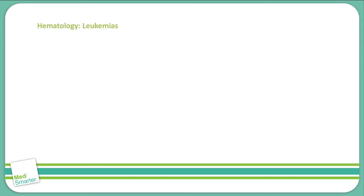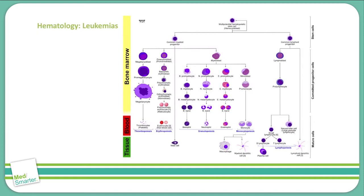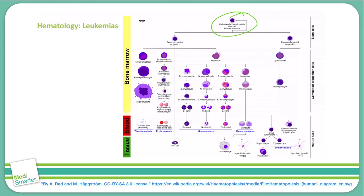The first step in understanding leukemias is understanding the whole process going on with the blood cells. So let's take a look at this chart to start. We have a multi-potential hemopoietic stem cell up here at the top, and that can differentiate into several different types of cells. It can become a myeloid progenitor cell or it can become a lymphoid progenitor cell.